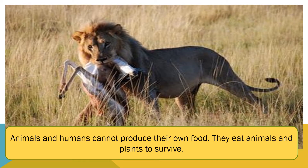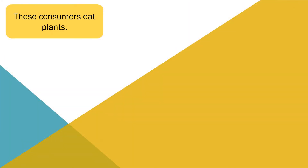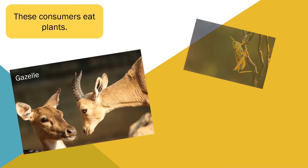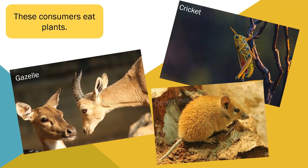Animals and humans cannot produce their own food. They eat animals and plants to survive. Animals and humans are called consumers. Some consumers eat plants, like gazelle, crickets and desert mouse.